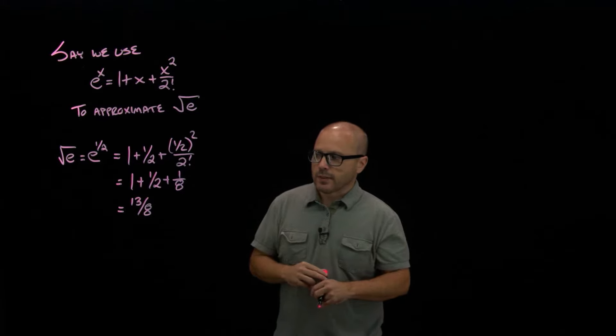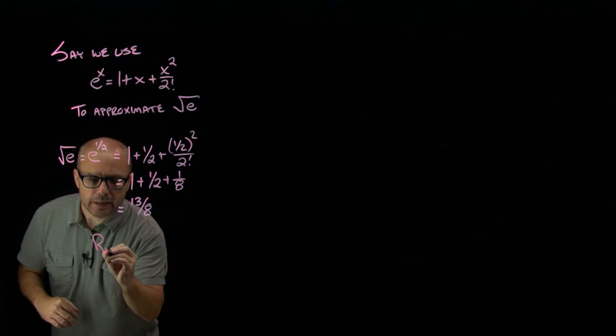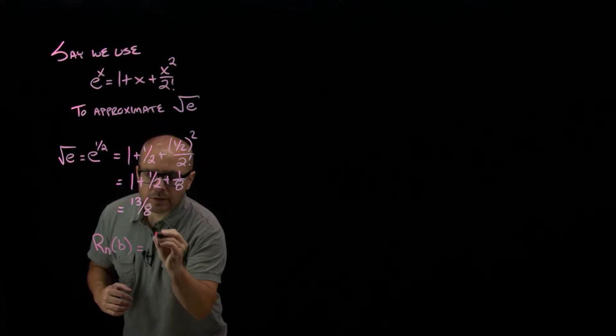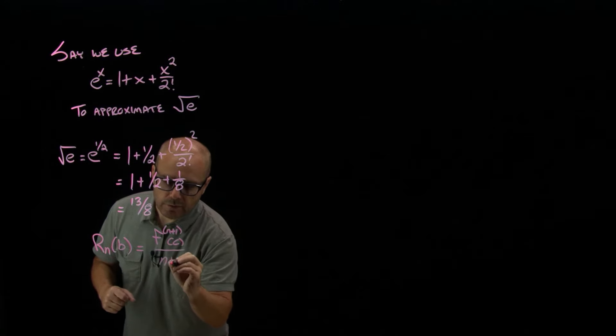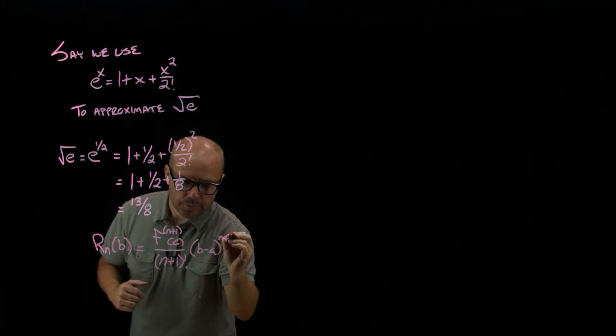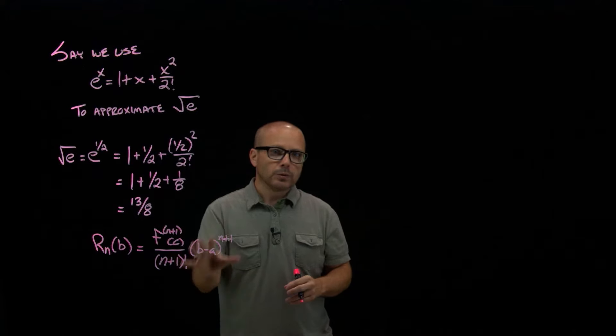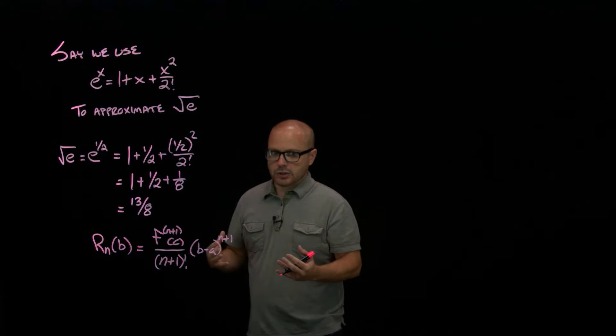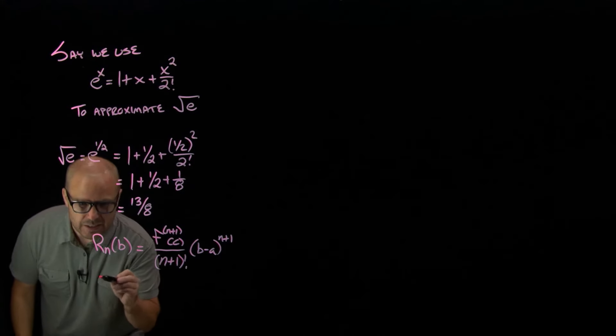So let's remind ourselves of what Taylor's theorem says. It says that the error, the nth remainder at b, is the n plus 1 derivative at c over n plus 1 factorial b minus a to the n plus 1. And let's make sure we understand what all the different unknowns in that formula are. So, first of all, what is the function? The function that we're trying to approximate is e to the x.